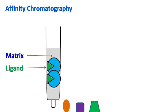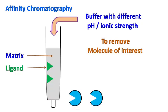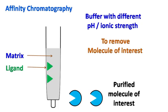Next, to dissociate the molecule of interest from the ligand, a buffer with different ionic strength or pH is passed. This finally releases the molecule of interest from the ligand and the molecule is obtained in pure form.